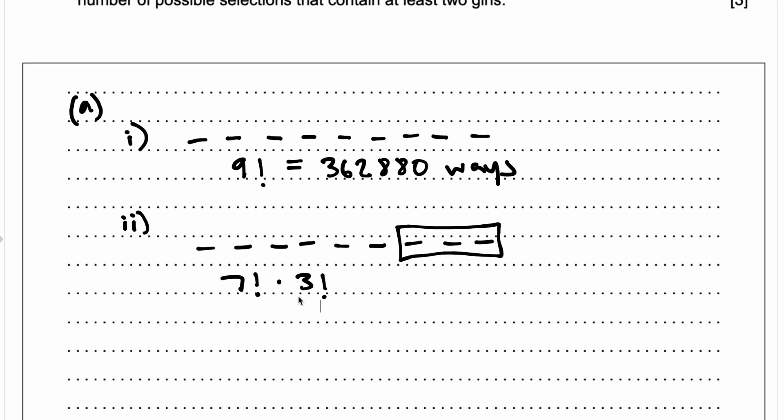So now putting this into the calculator, what do we get? Let's see, seven factorial times by three factorial. So we get 30,240 ways. And part B now.